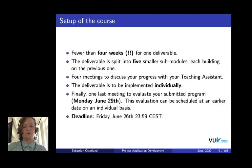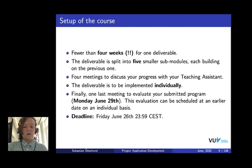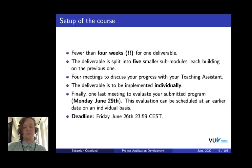In total you have four meetings to discuss your progress with your TA — individual meetings where you can discuss your progress or ask questions, so use them efficiently. One important thing: the deliverable for this course should be implemented individually — no groups, no collaboration. Avoid plagiarism: don't send your code to other people. The deadline for the assignment is Friday June 26th in the evening.